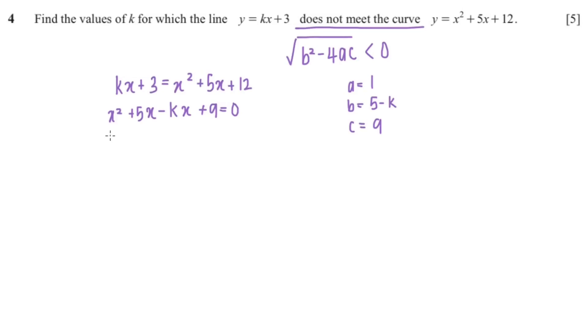Now that we have a, b, and c, we can substitute into the discriminant b squared minus 4ac. That would be 5 minus k squared minus 4 times 1 times 9,